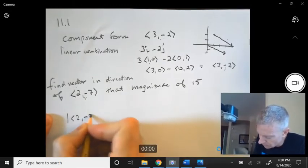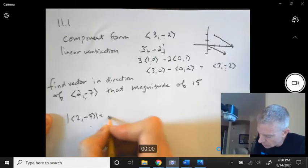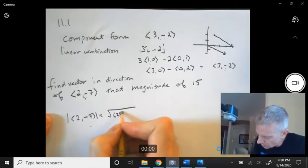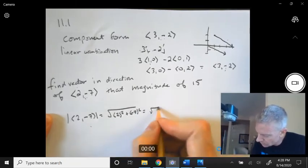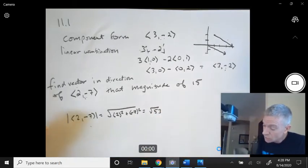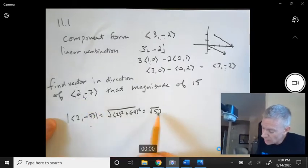So the magnitude of <2, -7> would be square root of 2 squared plus negative 7 squared. 49 plus 4, so that's going to be square root of 53. So this vector has a magnitude of √53.